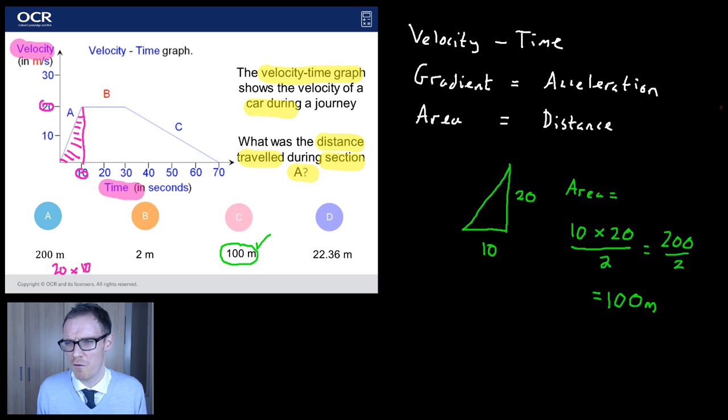Where's 2 meters come from? 2 meters is an interesting one. My theory with 2 meters is that students have taken the 20 and taken the 10. But they've done 20 divided by 10. So instead of multiplying and halving, for some reason they've done 20 divided by 10. Maybe thinking they've got to try and work out the average or something like that.